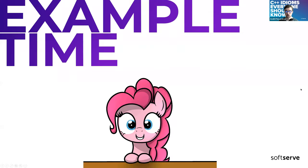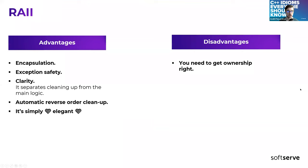To sum up RAII: you get great encapsulation since you manage resources in the class, you get exception safety, and it's a great way to separate cleanup logic from the main logic of your code. It gives you automatic reverse-order cleanup, and it's simply elegant. But at the same time, you need to analyze who should get the ownership, how to transfer ownership, and how to deal with circular dependencies — and that's kind of a disadvantage for this one.